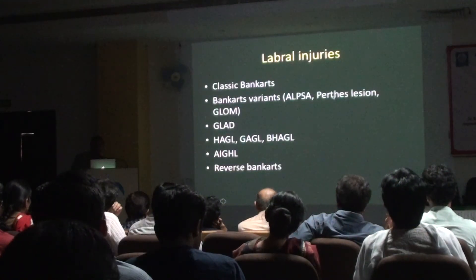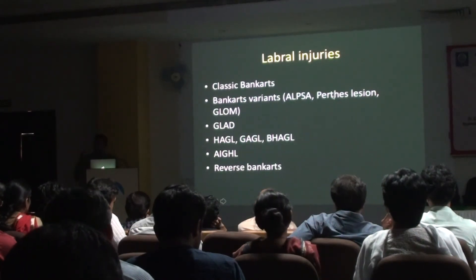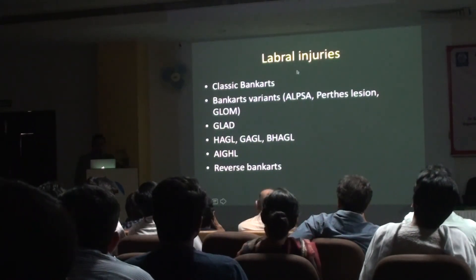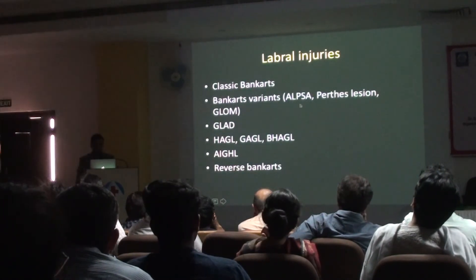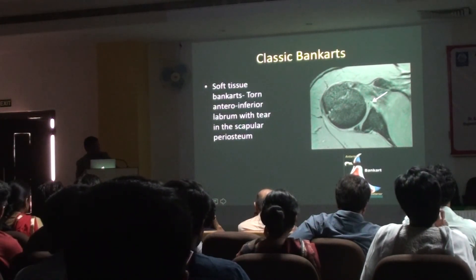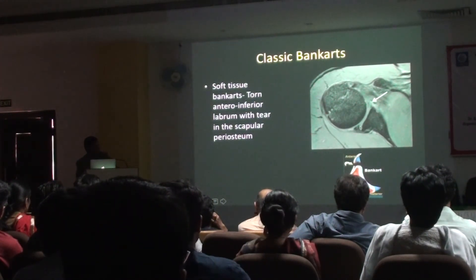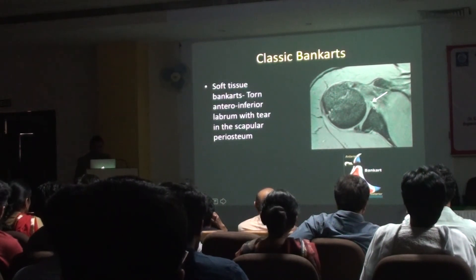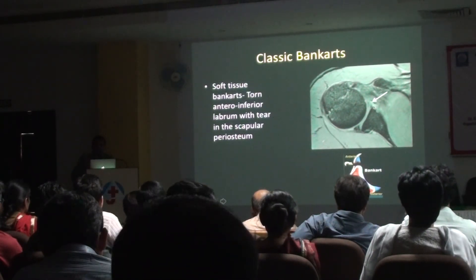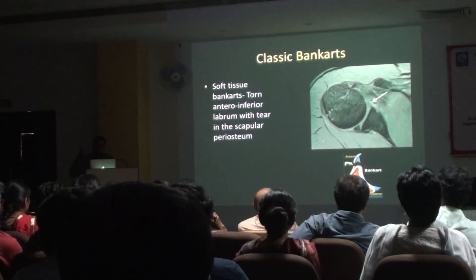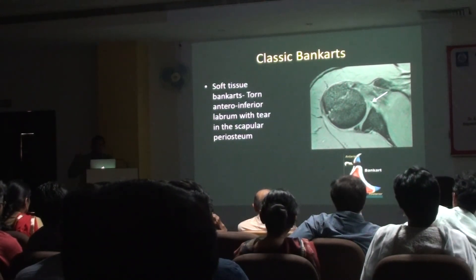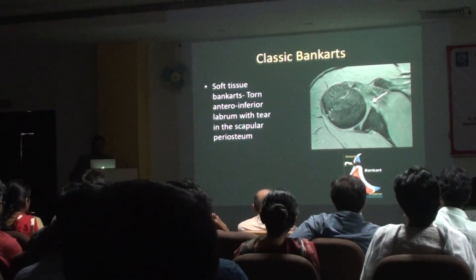The other thing to assess is labral injury. When I talk about labral injuries in traumatic anterior instability, classic Bankart: I should see a black structure anteriorly — if I'm not seeing it, the patient has torn the labrum. Whenever you see labral tears, automatically comment on: number one, whether the labrum is torn; number two, clockwise distribution of the tear; and number three, whether there is a bony component.